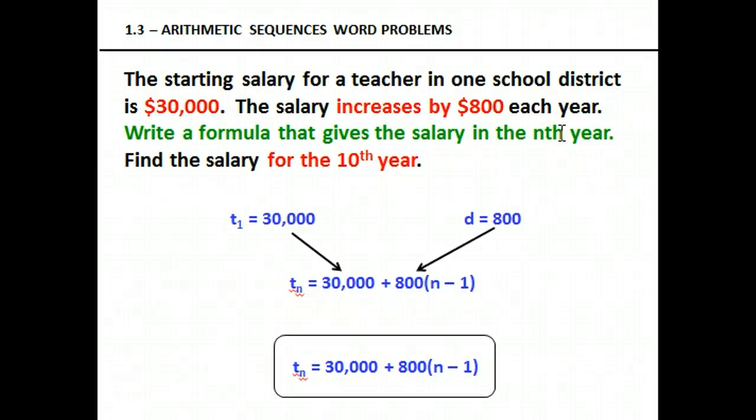So what do we need for the nth year? That means this can work for any year. If we want to find the salary for the 25th year, or the 13th year, or whatever, this formula will work. All we need to know is our first term, t sub 1 or u sub 1, is going to be $30,000. Our common difference is increasing, so it's going to be positive $800. All we have to do for this formula for the nth year is plug in those two numbers and leave our n's alone.